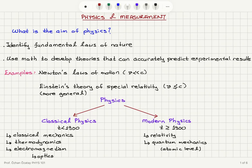Welcome to the first introductory course in a series of four courses on physics. We're going to start by talking about physics and measurements. The first question we have to answer is: what is the aim of physics? Physics is a discipline that aims to identify fundamental laws of nature, and we try to formulate them using math. Math is used as a tool to develop theories that can accurately predict experimental results.